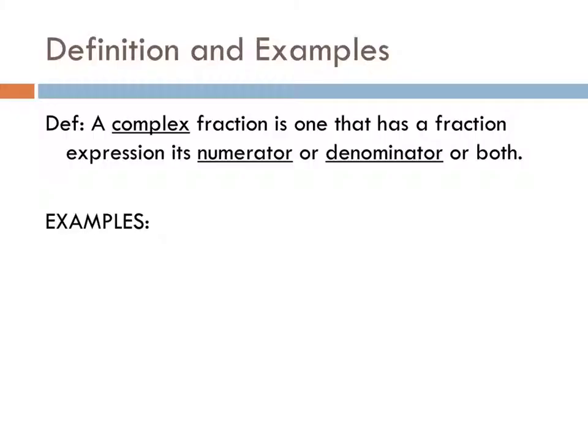Section 3 is about complex fractions. You've got a definition up there — it's simply the idea of having fractions on top of fractions. So it's a fraction and it's complex, meaning ugly looking. It says it's got fractions in the numerator, or denominator, or both.